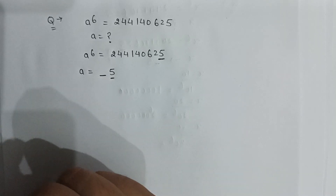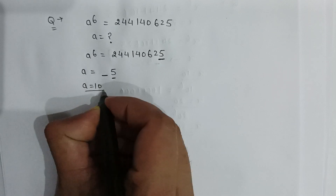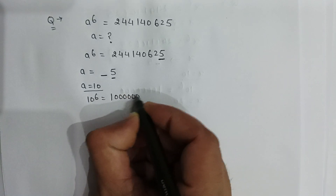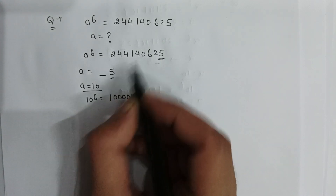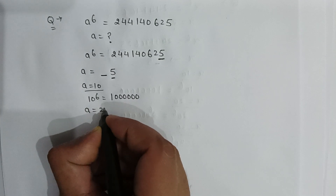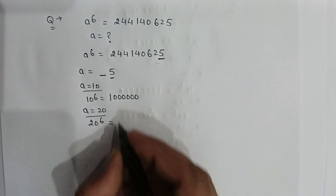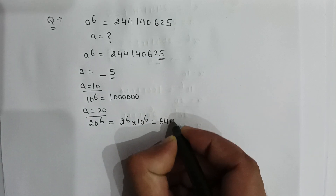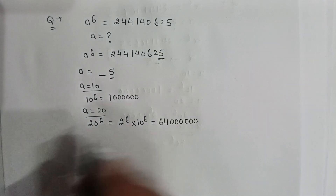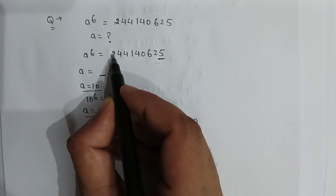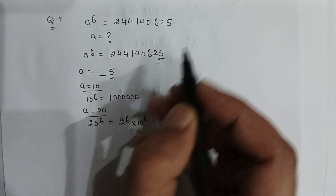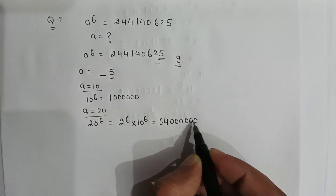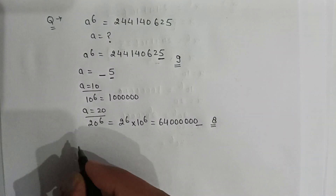If we put a equal to 10, then 10 to the power 6 is equal to 1,000,000, so this number is very less as compared to the given number. So let's try a equal to 20. 20 to the power 6 is equal to 2 to the power 6 multiplied by 10 to the power 6, which equals 64,000,000. The number of digits in this number is 8.